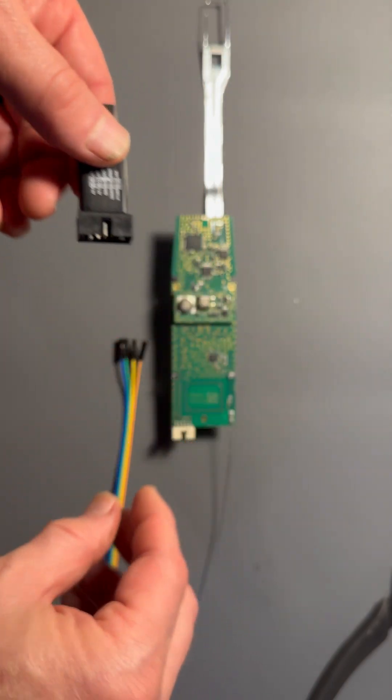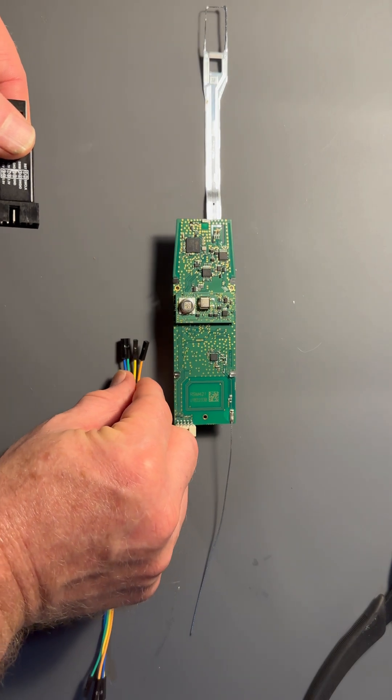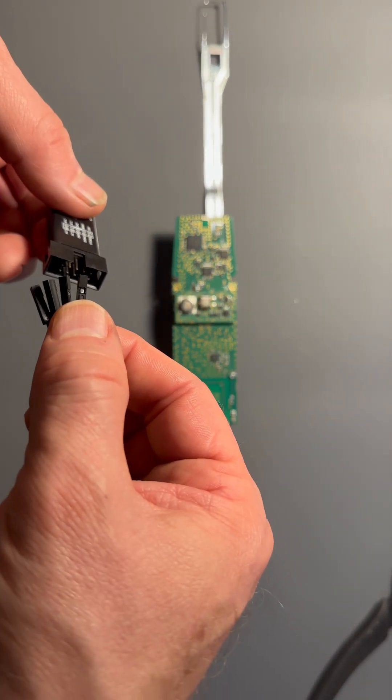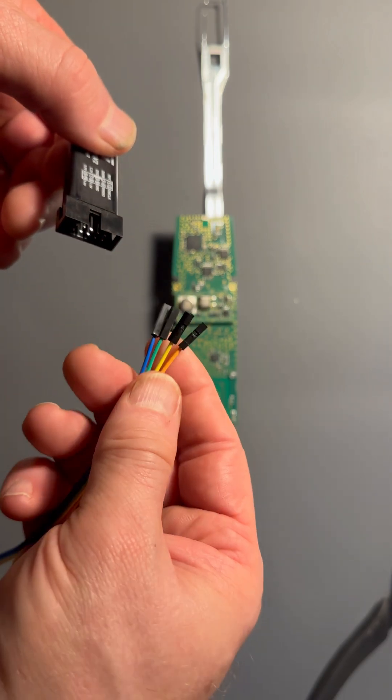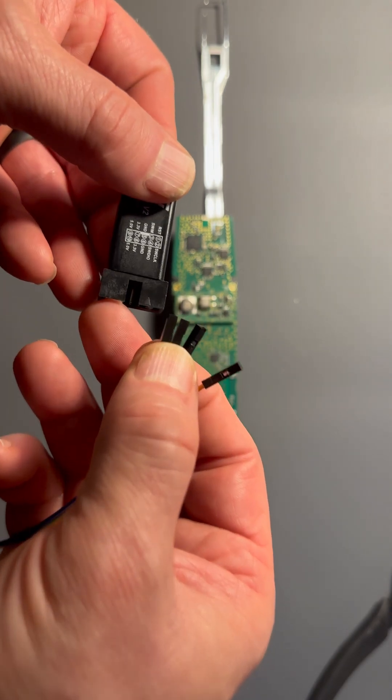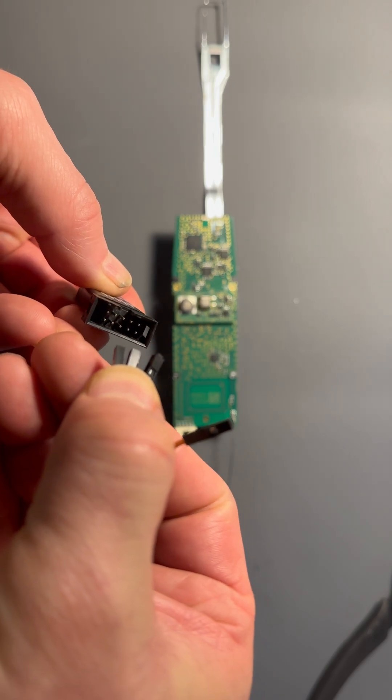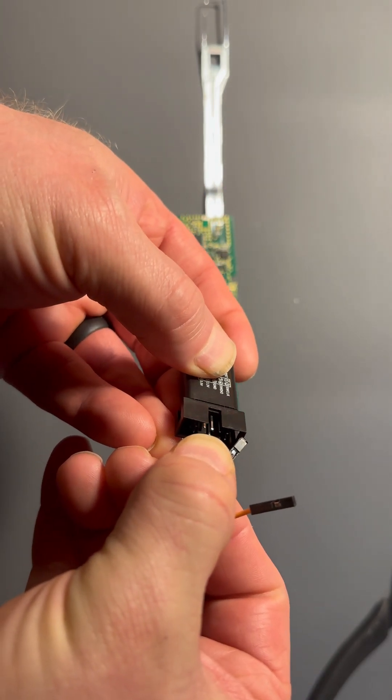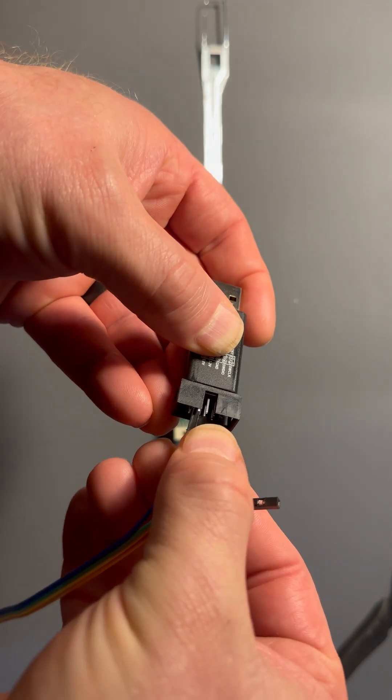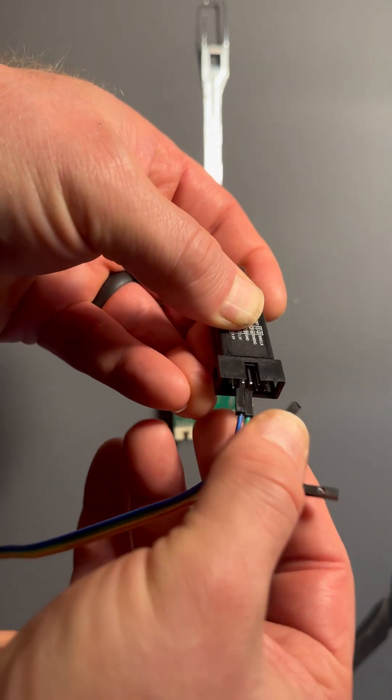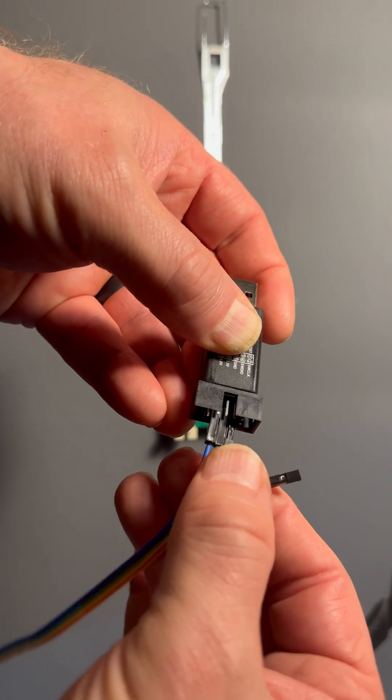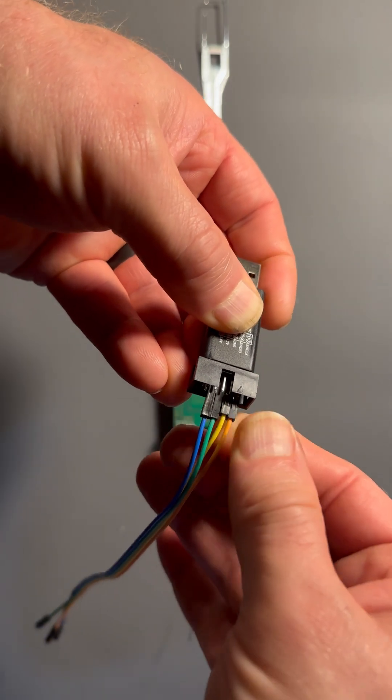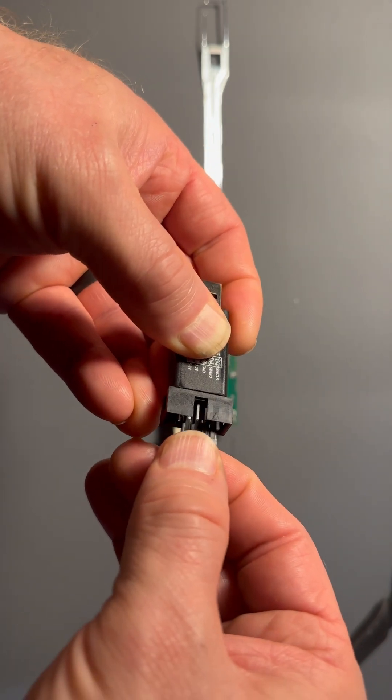We'll hook that up. The first step is to use these jumpers. You can find these on Amazon or eBay. The pins are going to go like this. I'm going to hook up ground first, so ground is this one, and then the next one is the blue, then the yellow, then the orange. Those are all plugged in.